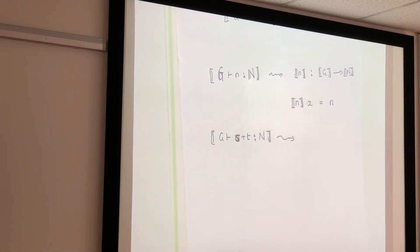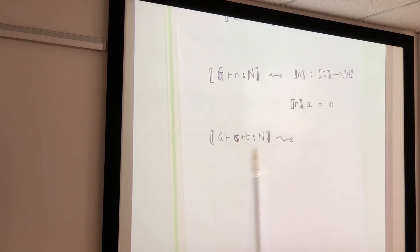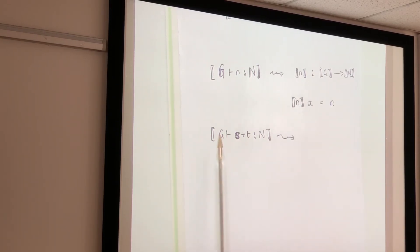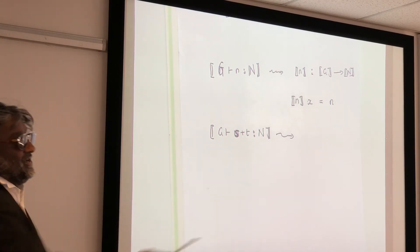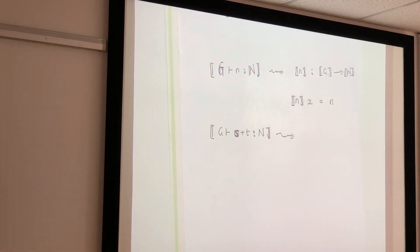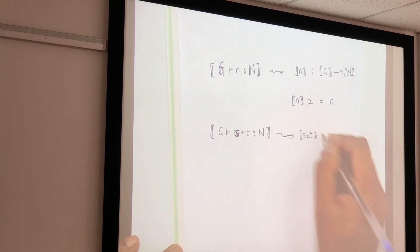There's a typing rule which says S + T can be a natural number providing that in context G, S is a natural number and in context G, T is a natural number. So we've got to turn S + T into a function. The meaning [S+T] should be a function that takes an element of [G] as input and returns an element of N as output.